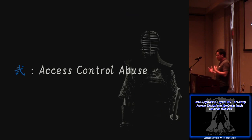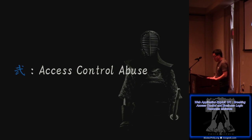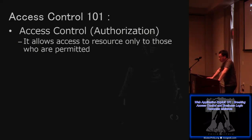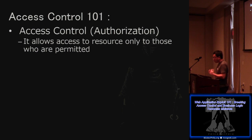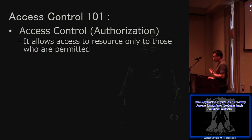Now let's discuss the actual vulnerabilities. First, access control abuse. What is access control? Access control — sometimes called authorization — allows access to resources only to those who are permitted. In other words, access control violation means someone who is not permitted can access some resource. That is the meaning of the vulnerability.